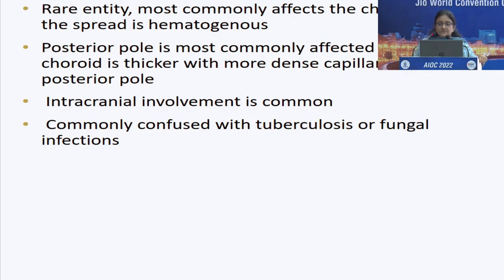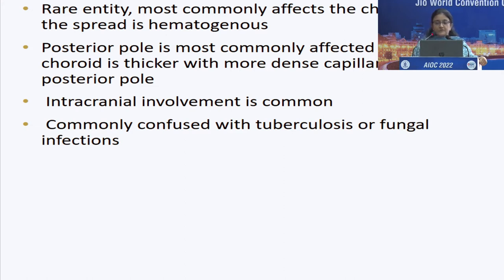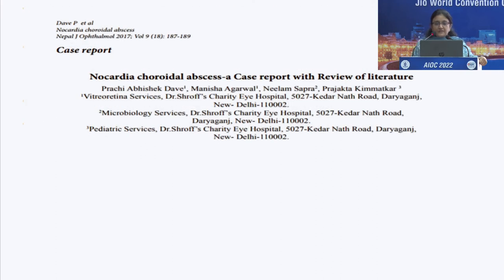This was a rare entity — Nocardia most commonly affects the choroid and spread is hematogenous. The posterior pole is said to be most commonly affected as the choroid is thicker with denser capillaries there. Intracranial involvement is common and it is very commonly confused with tuberculosis or fungal infection. We again published this as an interesting case report.